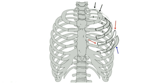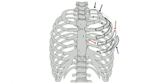Fractures of the ribs can occur at any place, but as the diagram suggests, most of the fractures occur near the origin of the bone, close to its articulation with the spinal column.